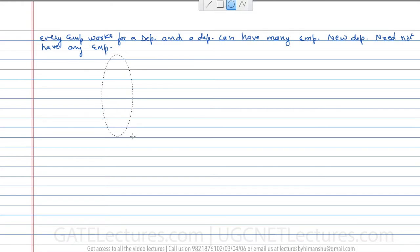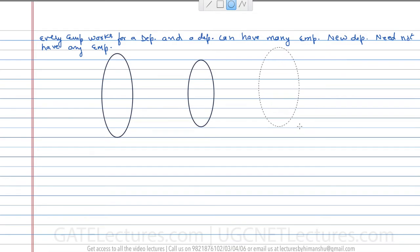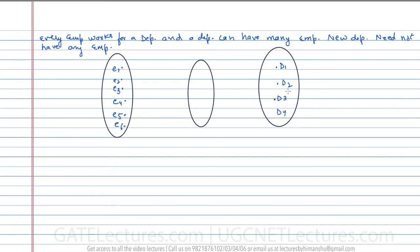We can draw it like this: one side represents employees, the diamond in the middle represents their association (the relationship 'works for'), and the other side represents the department. In this example, employee is an entity, 'works for' represents the relationship, and department is also an entity.